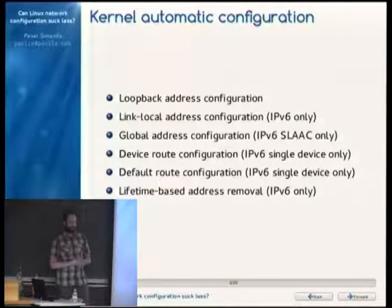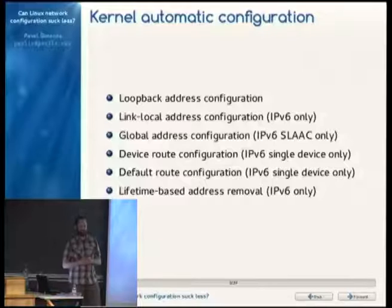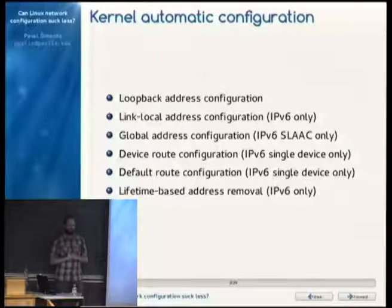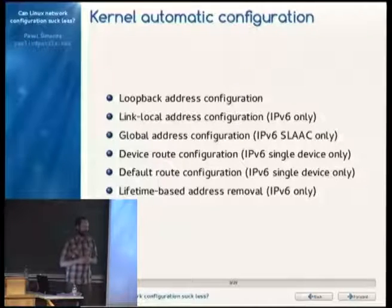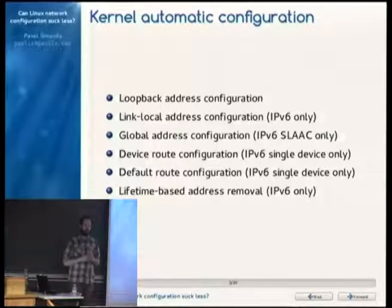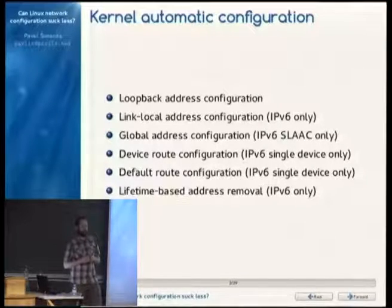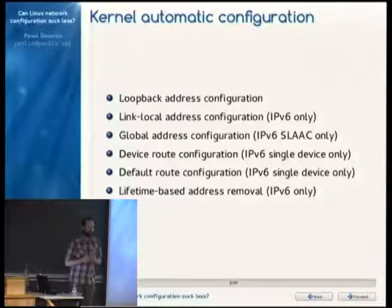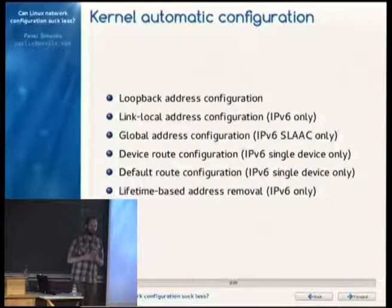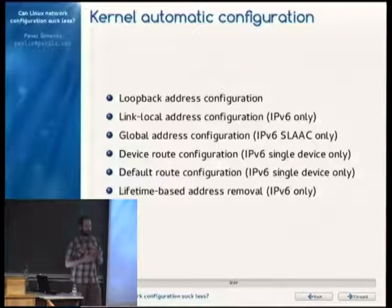This is sort of special for Linux — for example, BSDs are less auto-configuring. If you just turn your loopback interface up, you immediately get two IP addresses: one is IPv4 127.0.0.1, and the second is IPv6. On top of that, you have link-local addresses in the kernel today, but these are only implemented for IPv6.